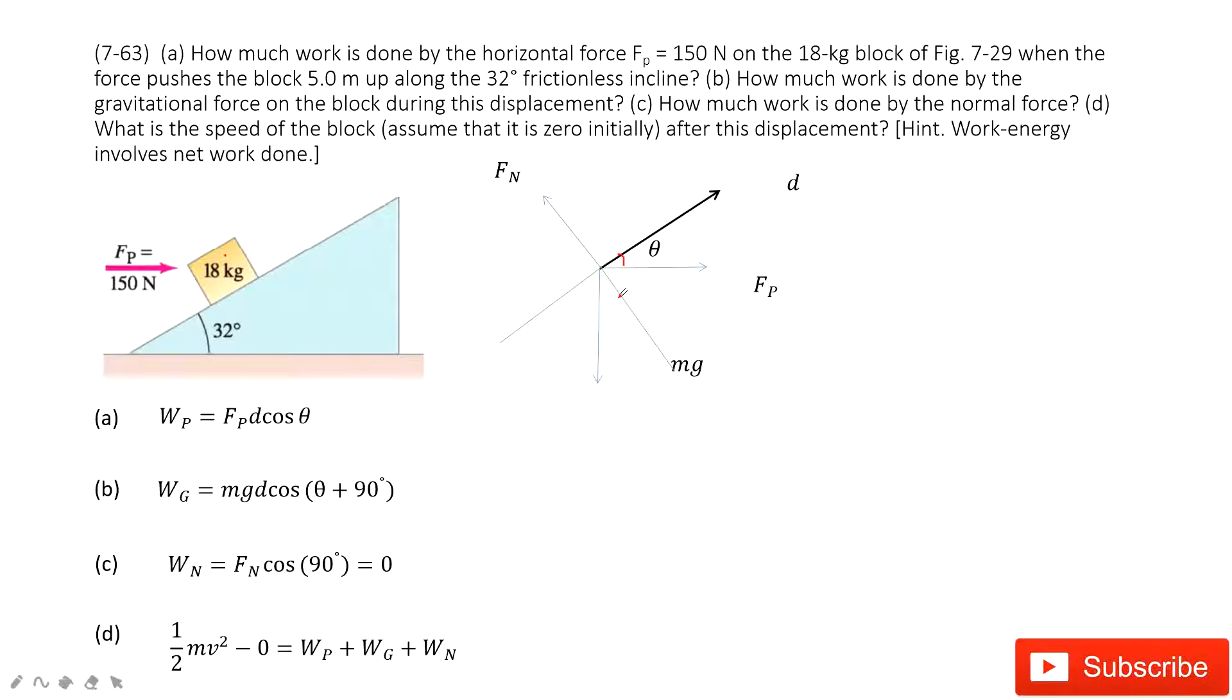Now the first one you need to find is the work done by Fp. So we look at this Fp. Fp is given, and the d, it is given? Yes, it tells you it's 5 m. And angle theta is given, 32 degrees.